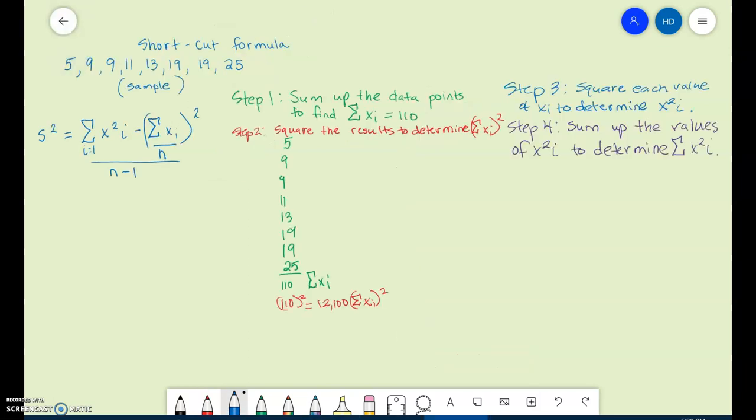For the next step, step 3, square each value of Xi to determine Xi². So we're going to square each value of X. We have 5², 9², 9², 11², 13², 19², 19², and 25².